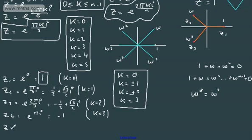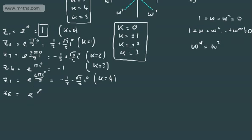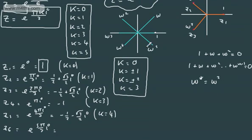For k=5: z6 = ω⁵ = e to the 5πi/3. We're in the fourth quadrant, which gives us ½ − (√3/2)i.